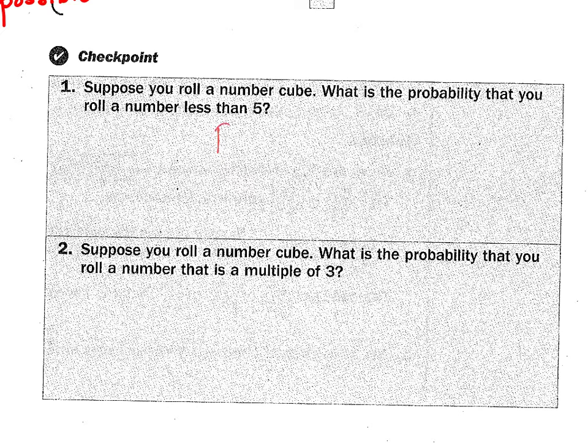So number one, it wants the probability of rolling a number less than five. How many numbers on the number cube are less than five? Four out of six. Does that reduce? Two thirds. So the probability that you roll a number less than five is two to three.